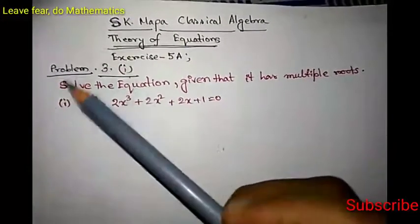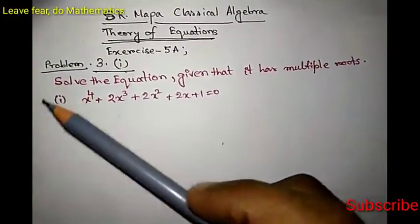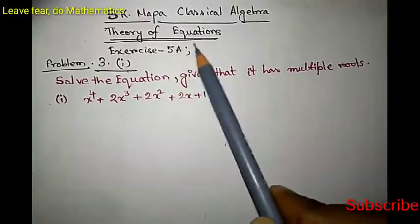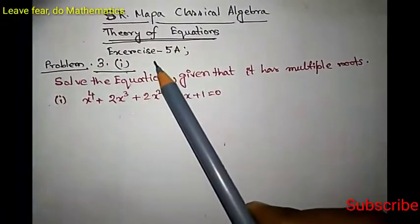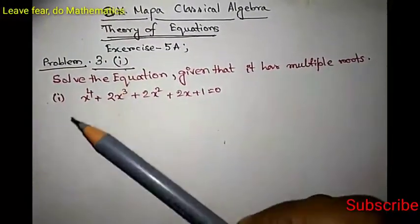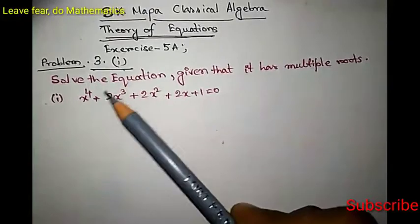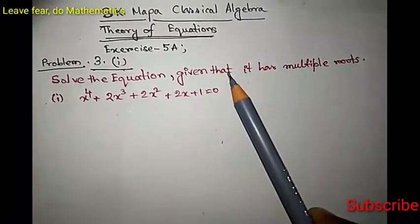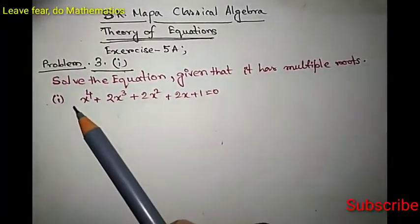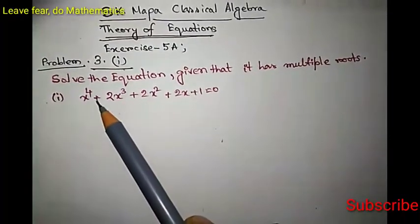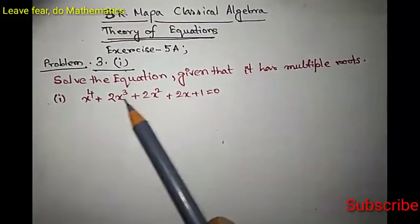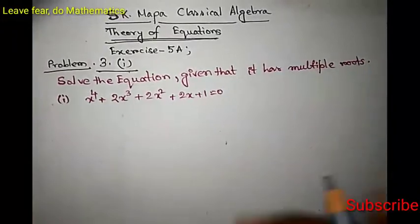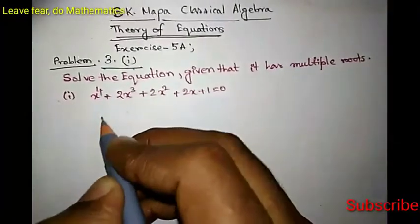Hello friends, welcome to Live Here Do Mathematics. Today we are going to solve another problem from SK Mapa Classical Algebra, Theory of Equations, Exercise 5A, Problem 3, Question Number 1. The problem says: solve the equation given that it has multiple roots. The equation is x⁴ + 2x³ + 2x² + 2x + 1 = 0.